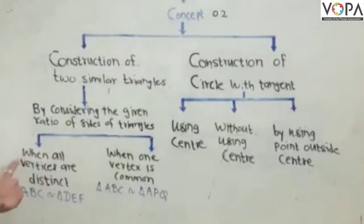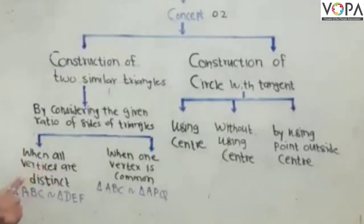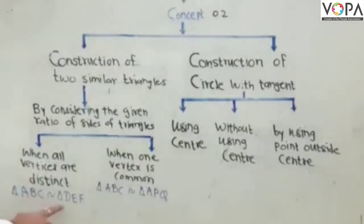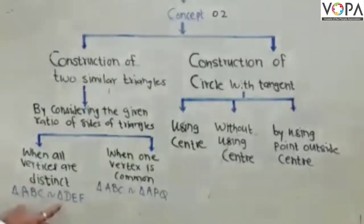In first condition, when all the vertices are distinct means different. For example, here we take triangle ABC, similar triangle DEF. In these two triangles, no vertex is common.